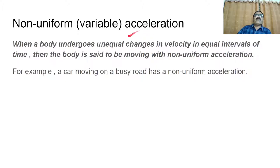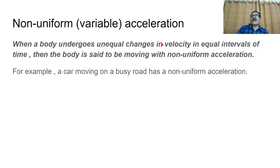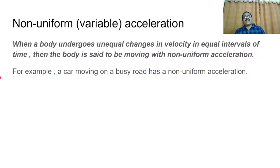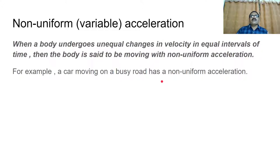Non-uniform acceleration is opposite to that. When a body undergoes unequal changes in velocity in equal intervals of time, the body is said to be moving with non-uniform acceleration. Example: a car moving on a busy road has non-uniform acceleration because the change in velocity is different in different intervals of time.